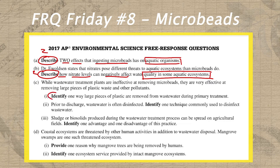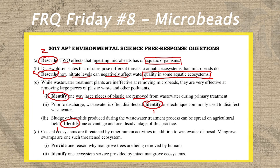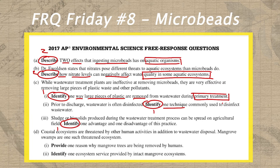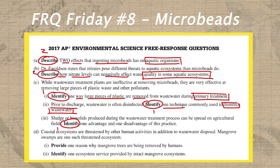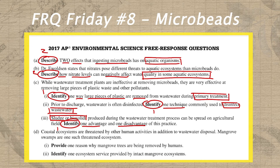In letter C, we have three identify prompts, so I'm gonna circle each of those and write a one next to each, just to remind myself that these are simple, straightforward, one-phrase answers. In part one, we need to identify one way that large pieces of plastic are removed from wastewater during primary treatment — specifically, how during primary treatment do we remove large pieces of plastic. In part two, we need to identify a technique that's commonly used to disinfect wastewater. In part three, we're asked about sludges and biosolids produced during the wastewater treatment process being spread on agricultural fields, and what we're identifying is one advantage and one disadvantage of that practice.